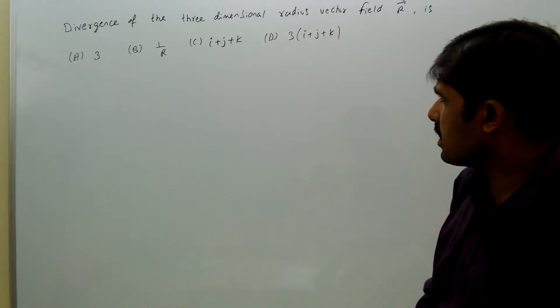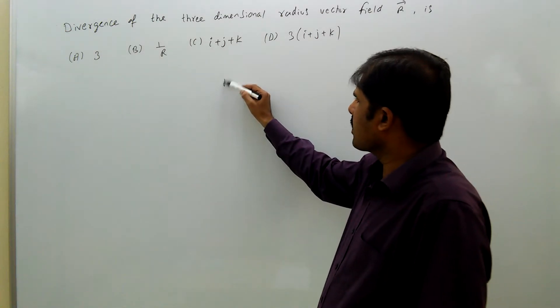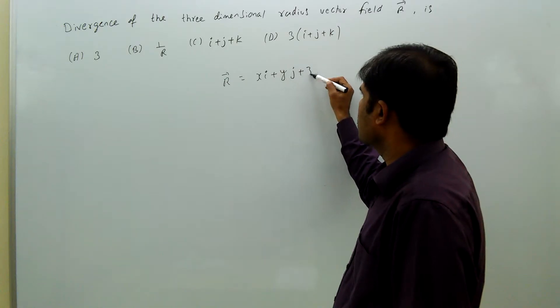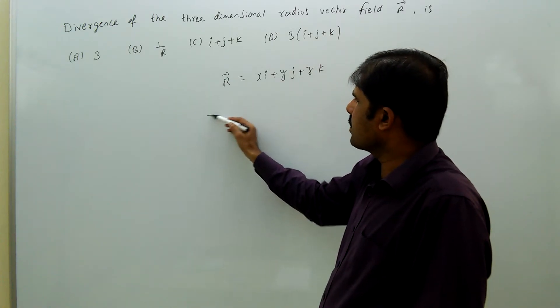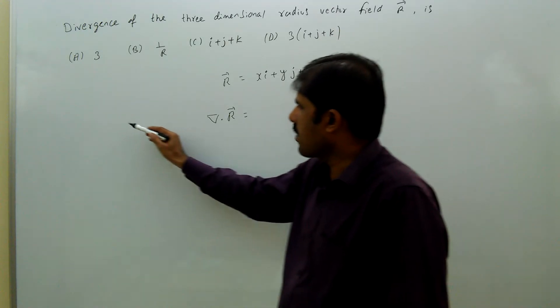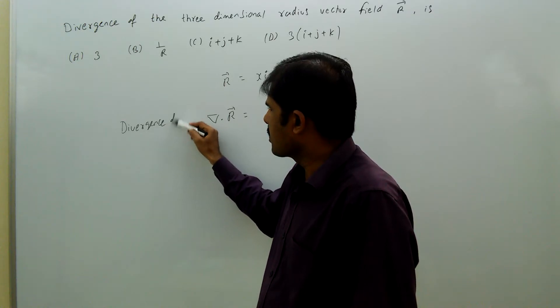See here, divergence means it must be a scalar. R vector is nothing but Xi plus Yj plus Zk. Now divergence means del dot R, the divergence of R.